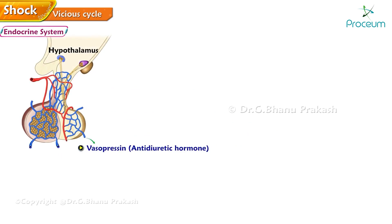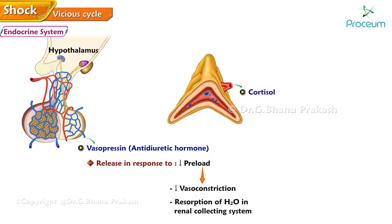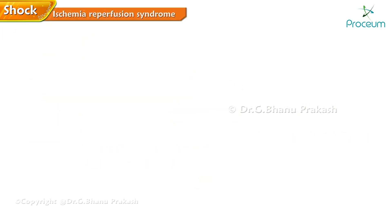Endocrine system: Vasopressin, an antidiuretic hormone, is released from the hypothalamus in response to decreased preload, resulting in vasoconstriction and resorption of water in the renal collecting system. Cortisol is also released from the adrenal cortex, resulting in sodium and water resorption and sensitizing cells to catecholamines.